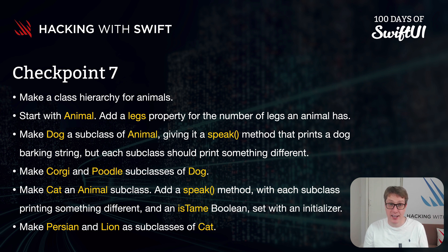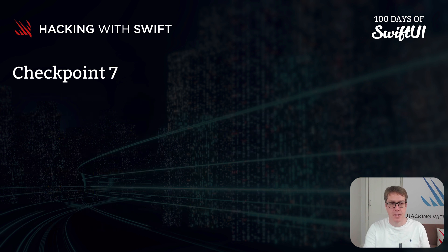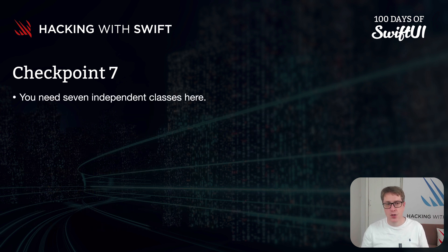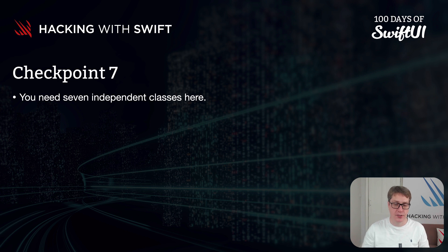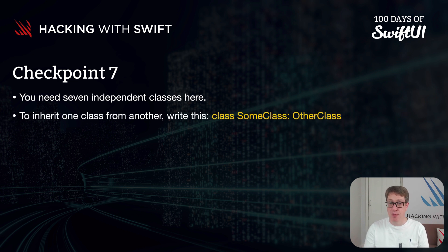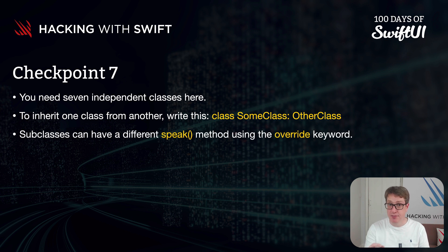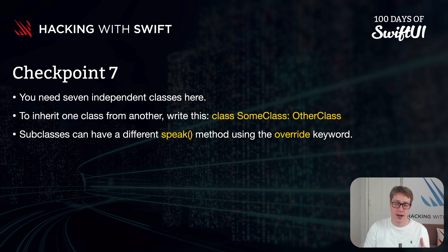Okay, if you're still here, let's talk hints. First up, you're going to need seven independent classes, of which only one — animal — has no parent class. To make one class inherit from another, write: class SomeClass: OtherClass. You can make subclasses have different speak methods using the override keyword, so your poodle and corgi will override the speak from dog, and your Persian and lion will override the speak from cat.